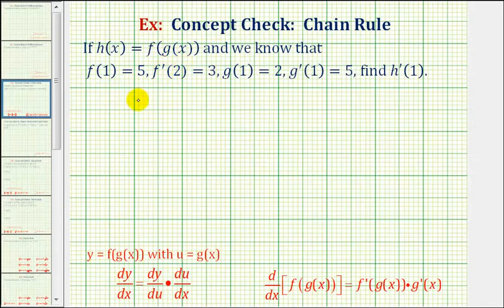So if we're given that h of x is equal to f of g of x, the first step is to recognize that the inner function is equal to g of x, and the outer function is f.